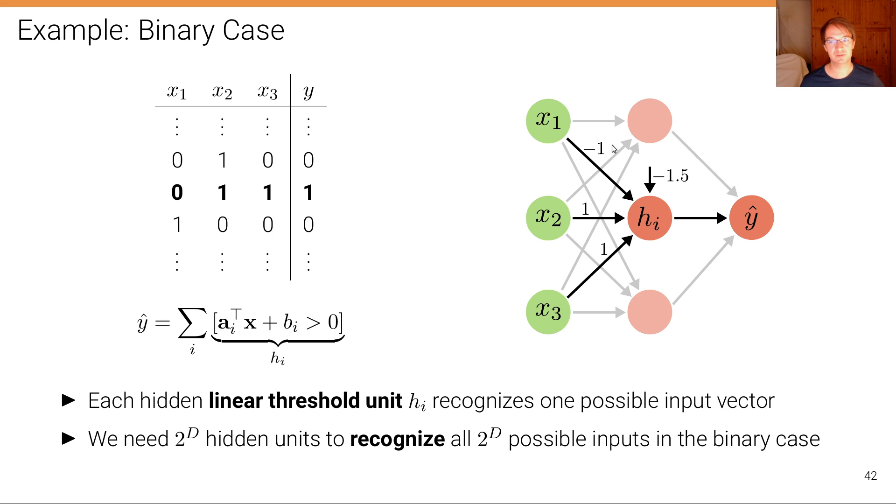And so what you can see, so this is in black here, the setting that we have chosen for recognizing the vector 0,1,1 and outputting 1. And you can see that this is correct because we have chosen 1 and 1 for x2 and x3, so they are recognizing this, and we have chosen -1 for the first one such that if the first one would not be zero, if it would be one, we're lowering the activation.